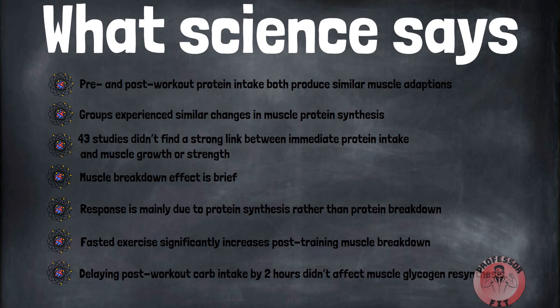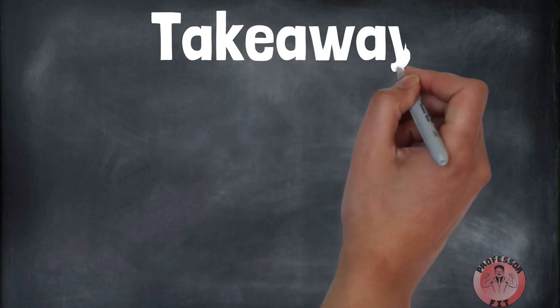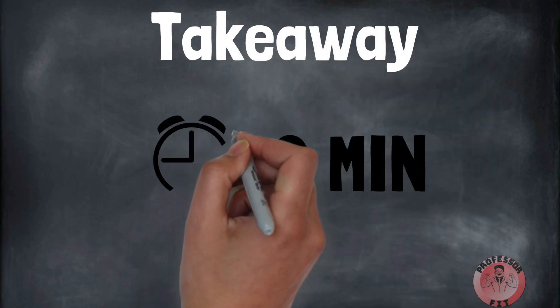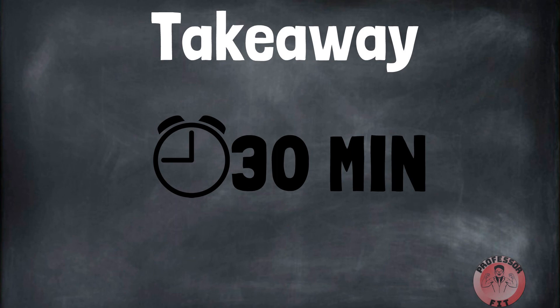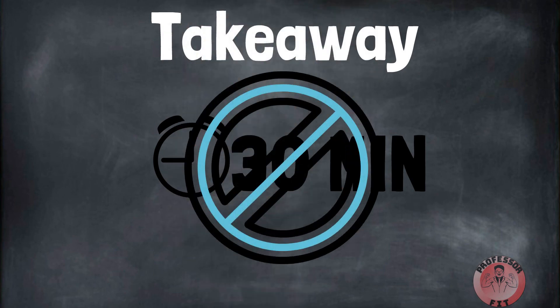Takeaway: According to research, the 30-minute anabolic window doesn't exist, meaning that a later post-workout meal won't significantly hinder muscle growth. This suggests that eating protein and carbs immediately after exercise isn't critical for maximum gains.